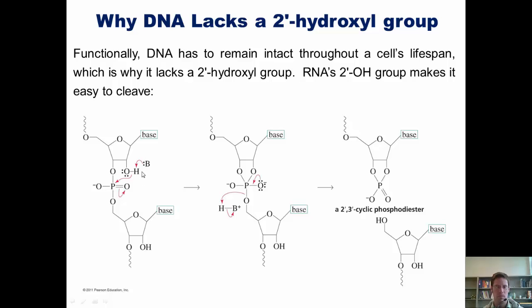The base grabs the hydrogen off of the two prime hydroxyl group, dumps these electrons into the phosphate phosphorus, and thrusts them up onto the oxygen. This then closes and kicks off this group, which then in turn steals the proton back to protonate this five prime hydroxyl group. This generates a two prime, three prime cyclic phosphodiester shown here. What's the whole point of my showing you this? Well, the point is this.